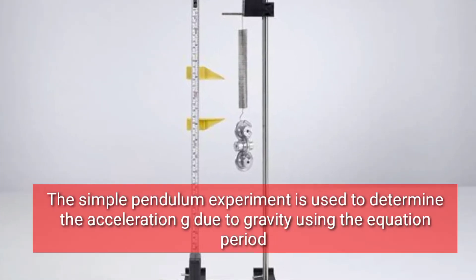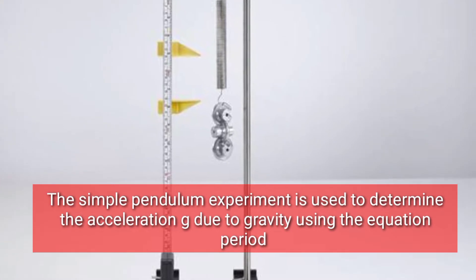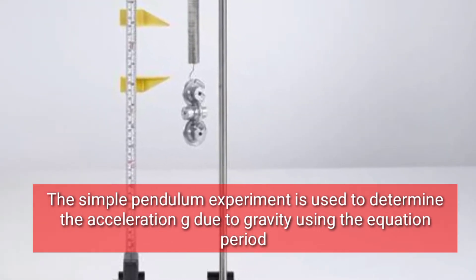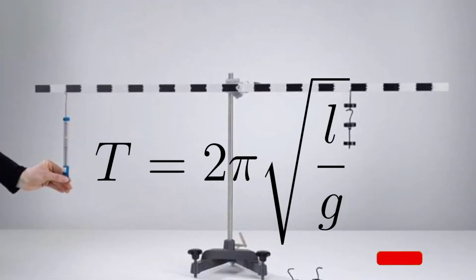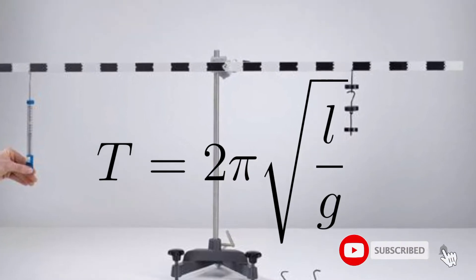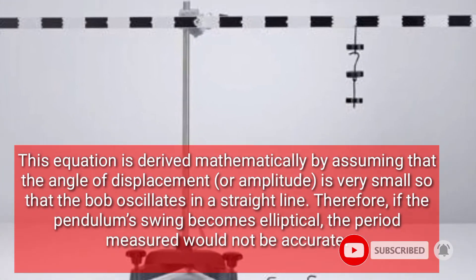The simple pendulum experiment is used to determine the acceleration g due to gravity using the equation period t equals 2π square root of l over g, where l equals length of the pendulum.